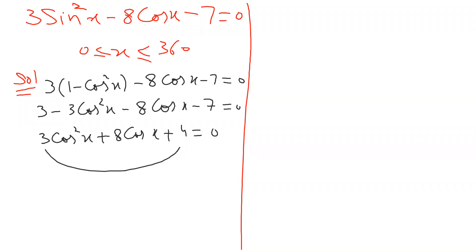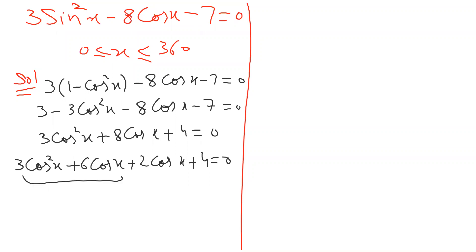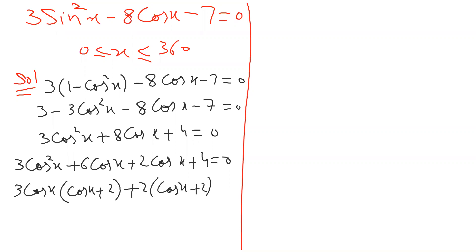This time I will not say let cosine x equal K — I will do it without that substitution. It is allowed. 3 times 4 is 12, and 6 minus 2 gives 12 — matching. So direct factorization is allowed. Dealing with cosine x like a variable: 3 cosine x common from the first two terms gives (cosine x plus 2), and 2 common from the last gives (cosine x plus 2).